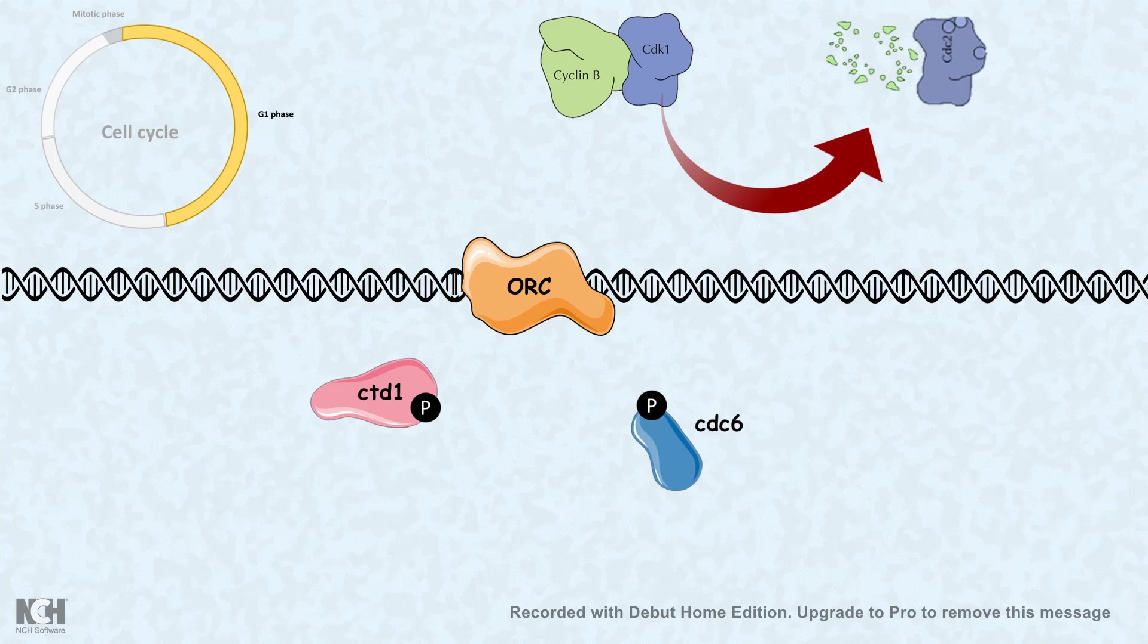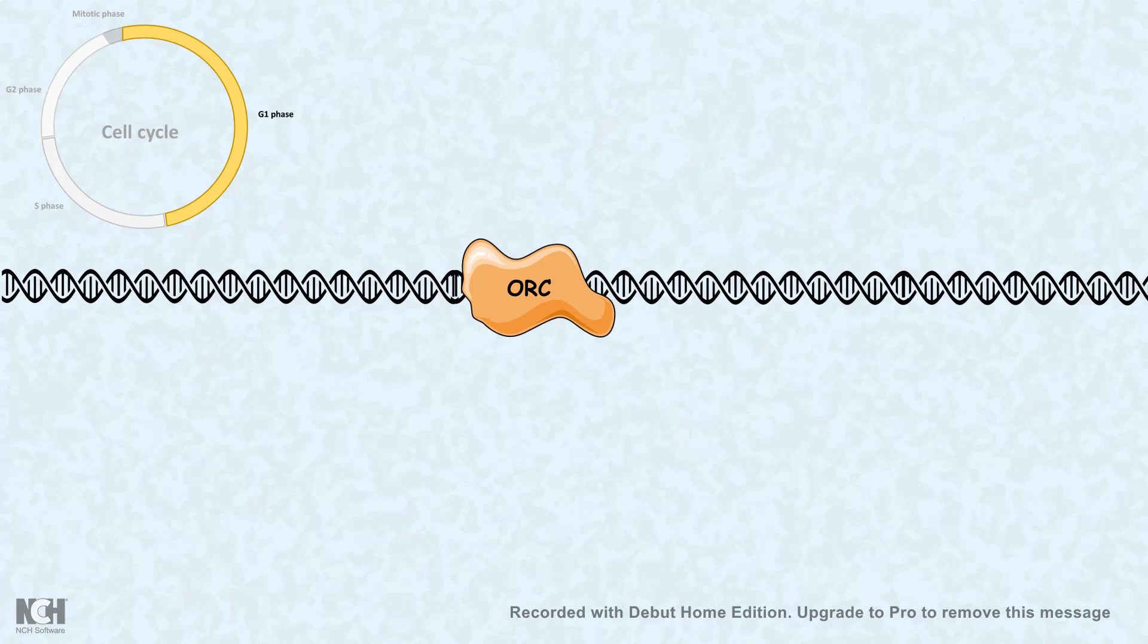But at that point in time, the opposing force, the phosphatases are active, which work upon CTD1 and CDC6. Once they are dephosphorylated, they can reassociate with the ORC again. So in the next round of division, another replication event can take place.